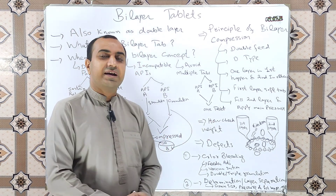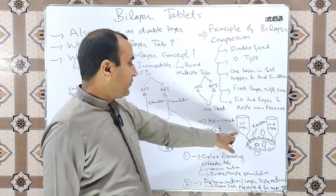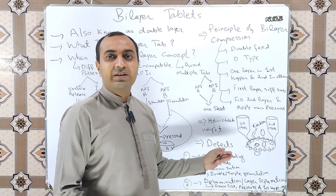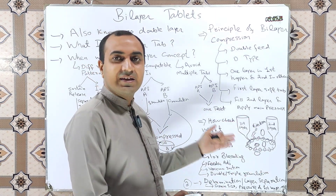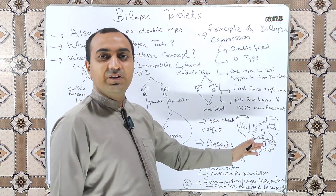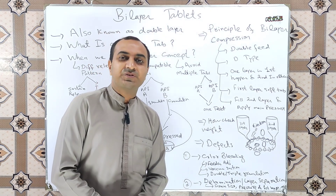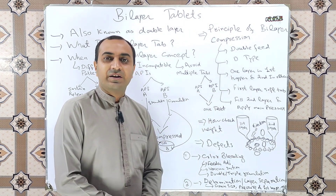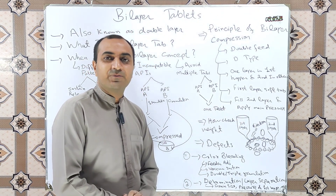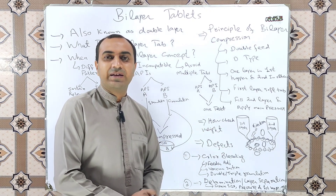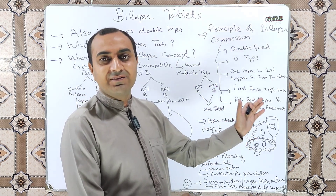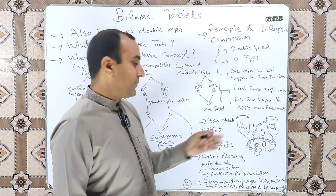An important concept is how to check the weight of double layer tablets. For the first layer, an ejection system is provided — when a soft tablet is manufactured, we can eject the soft layer and check its weight. To check the weight of each layer after full compression, a conventional technique uses a sharp-edged cutting blade placed over the margin where the two layers join. Applying a little force separates the two layers, and we can measure the weight of each layer, which must be as per the BMR.